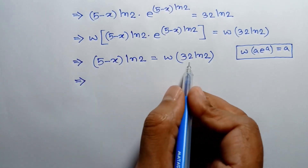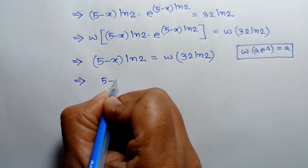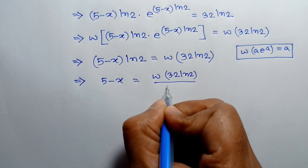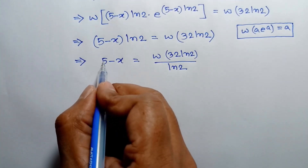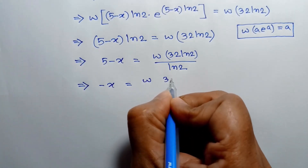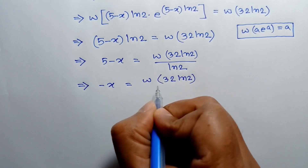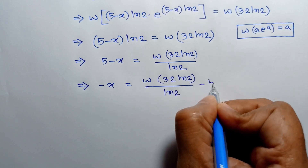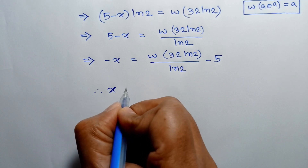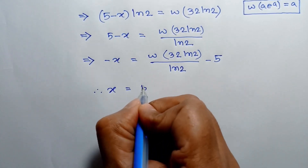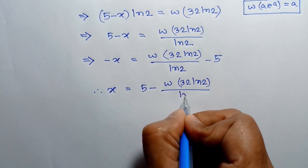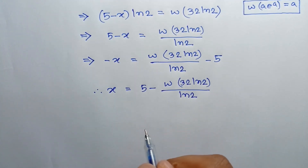Dividing both sides by ln 2, we get 5 minus x is equal to W of 32 ln 2 over ln 2. Taking 5 to the right side, negative x is equal to W of 32 ln 2 over ln 2 minus 5. Multiplying both sides by negative 1, x is equal to 5 minus W of 32 ln 2 over ln 2. This is the general solution of the equation.